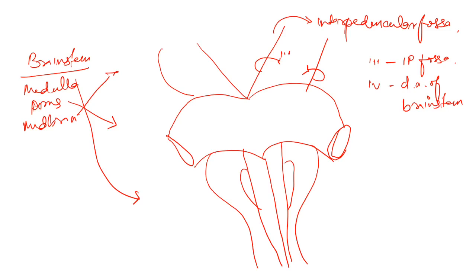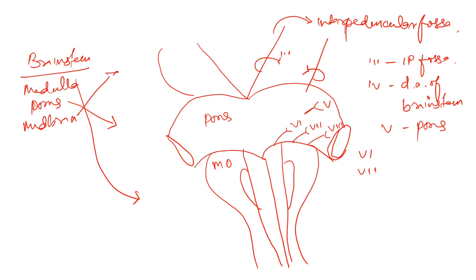The fourth nerve is from the dorsal aspect. The fifth nerve is somewhere here in the pons. Now, cranial nerves six, seven, and eight: six is here, seven is here, and eight is here. Six, seven, and eight arise from the pontomedullary junction.